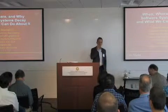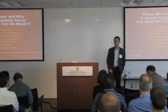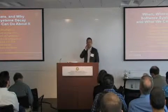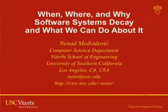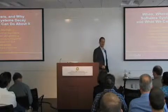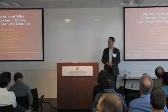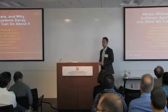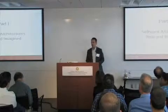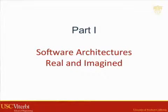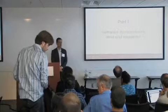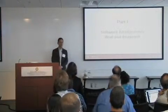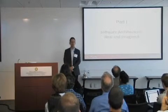I want to tell you a story in three parts today. It's going to deal with what goes wrong with software systems — why software systems oftentimes don't actually look anything like the way you think they ought to look like, or the way their designers say they look like. And then I want to talk about what we've tried to do to stem the decay that most software systems end up experiencing.